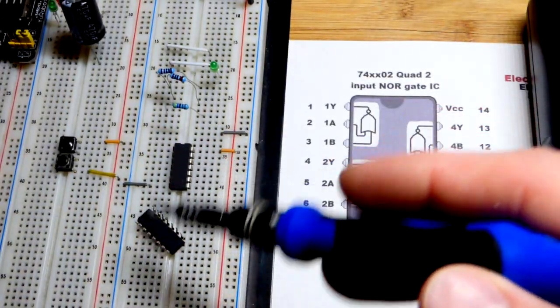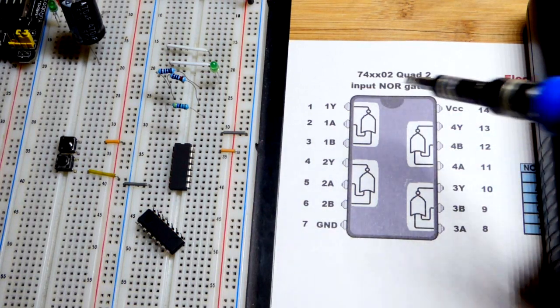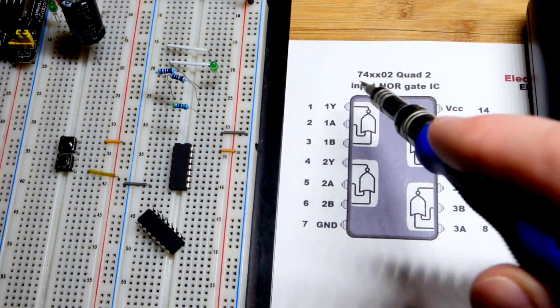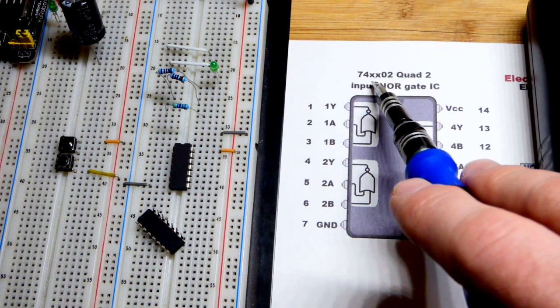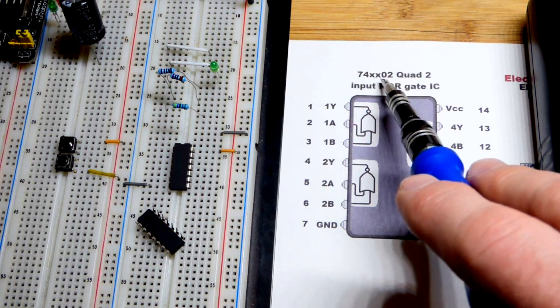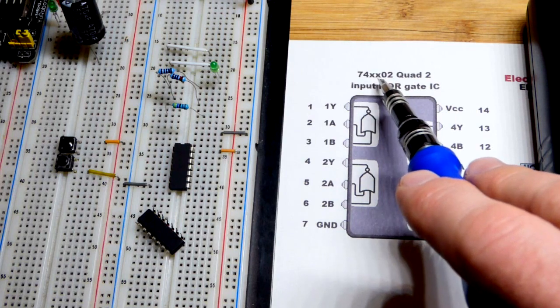So we have one there, one there. They have the same pin layout. That's what the 7400 series means - you'll have different letters in there, maybe high-speed CMOS HC or LS low-power Schottky.